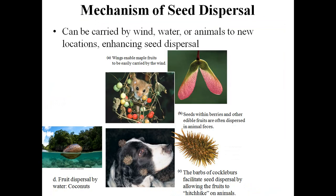Seeds may be dispersed by wind, by water, or by the help of animals to other places. Some seeds — like in the case of maple, which we already explained — have wings that enable the fruits to be easily carried by the wind.